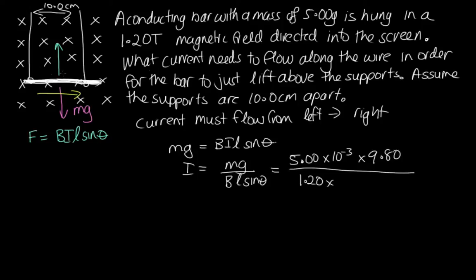Now L is the length of the wire through which current's flowing in the magnetic field. So the current's only flowing. It'll come down this support, flow along this part, and go back up there. And so this length is 10 centimeters, so 0.100.